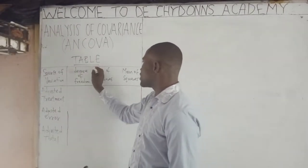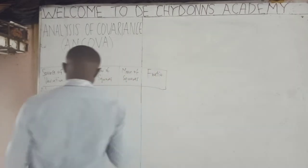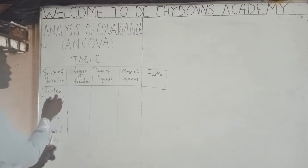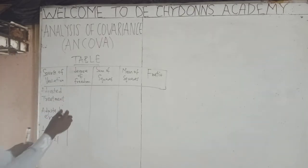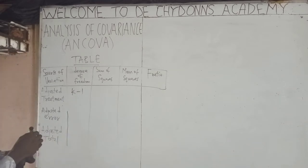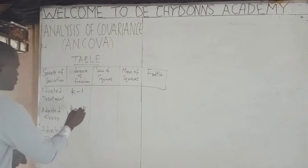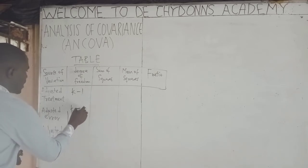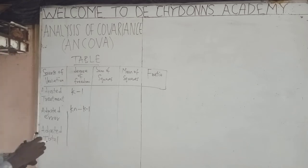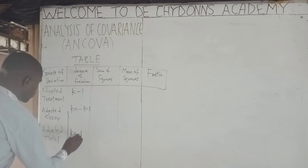Under degree of freedom: the degree of freedom of adjusted treatment is K-1, the degree of freedom of adjusted error is K(n-1)-1, and the degree of freedom of adjusted total is Kn-1.